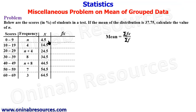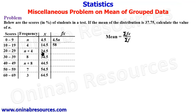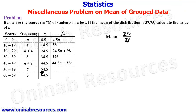Next we find fx — frequency multiplied by the midpoint x. So: n × 4.5 = 4.5n; 4 × 14.5 = 58; (n+4) × 24.5 = 24.5n + 98; 8 × 34.5 = 276; (n+8) × 44.5 = 44.5n + 356; 7 × 54.5 = 381.5; and 3 × 64.5 = 193.5.